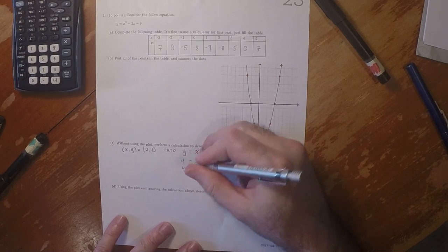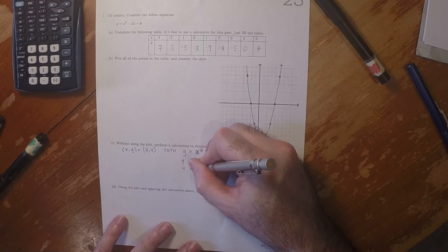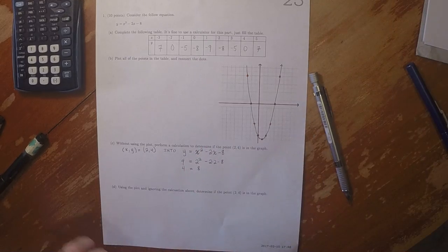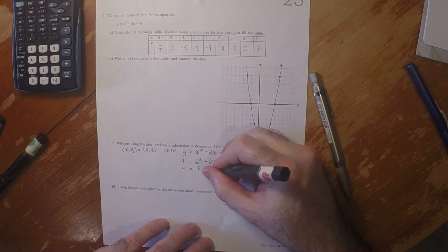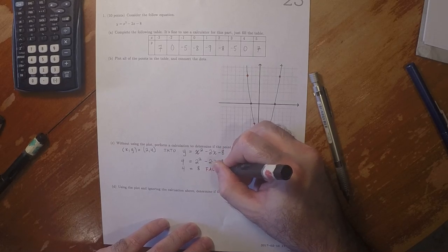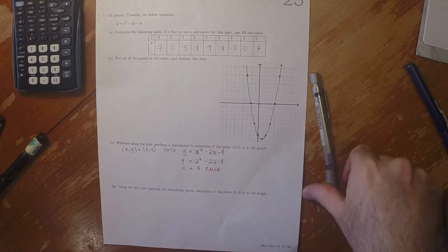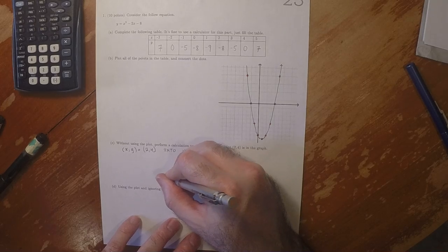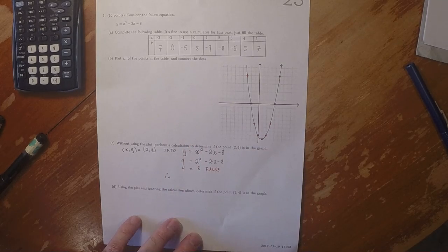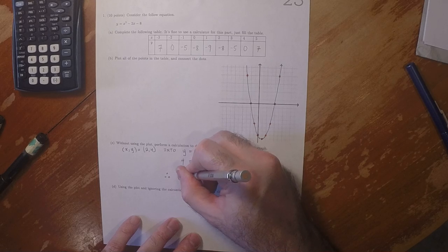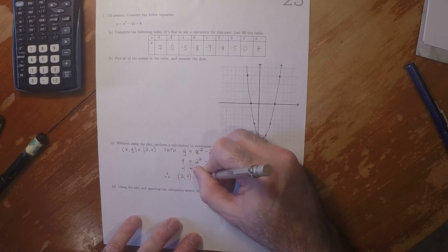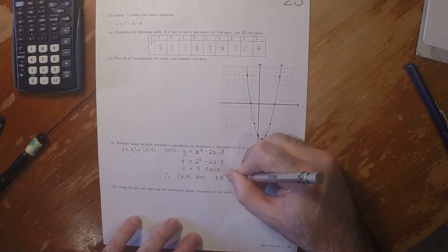So that is 4 = -8, and this is false. Therefore, the answer is that (2, 4) is not in the graph.